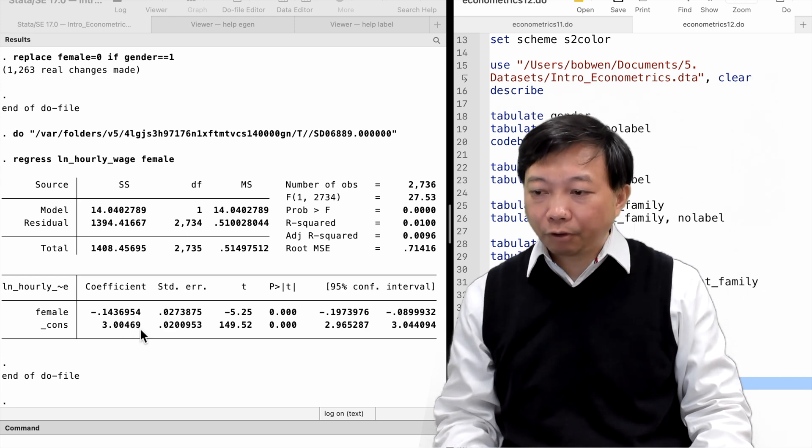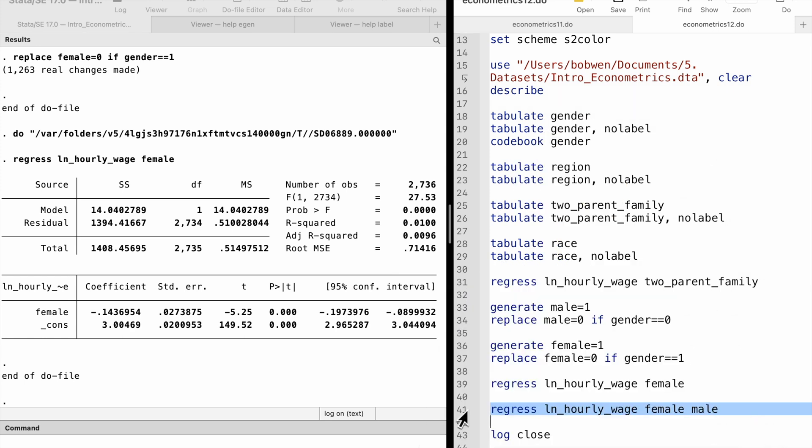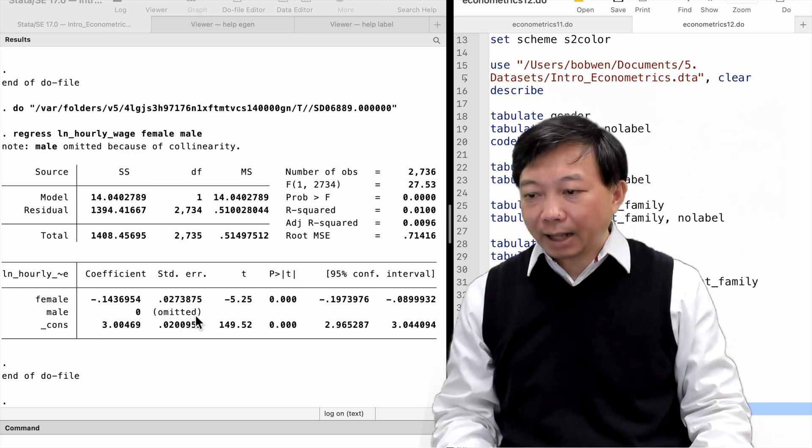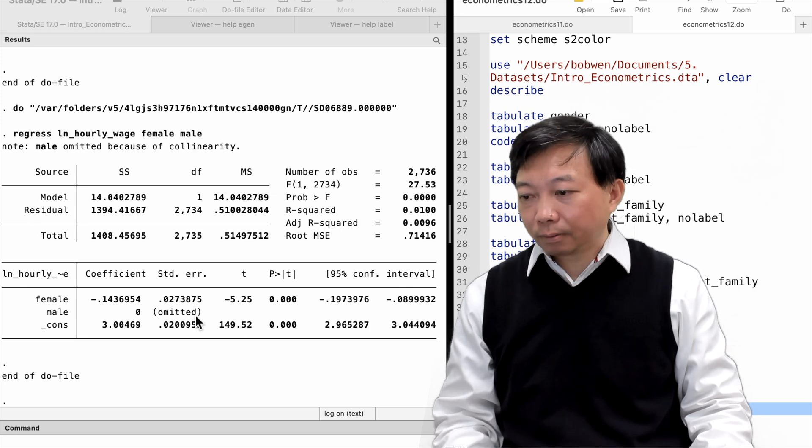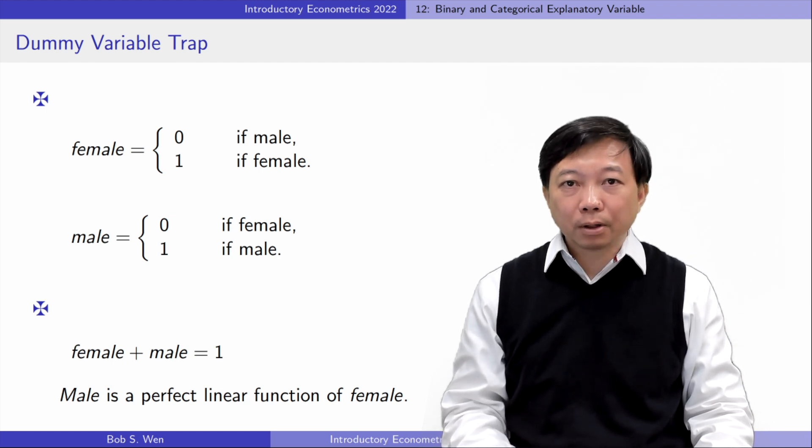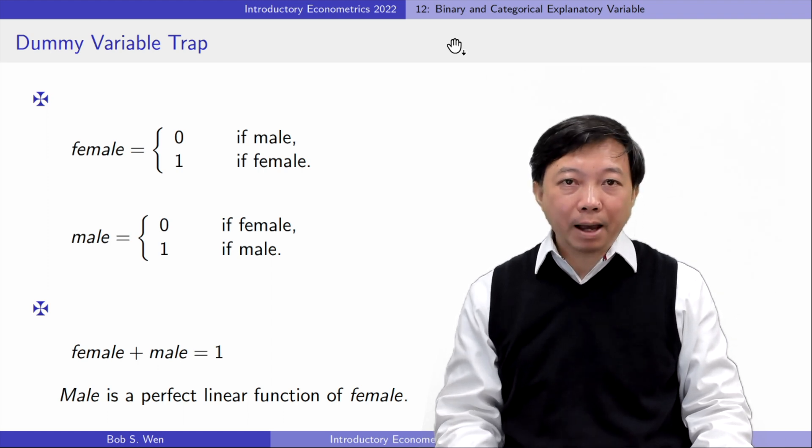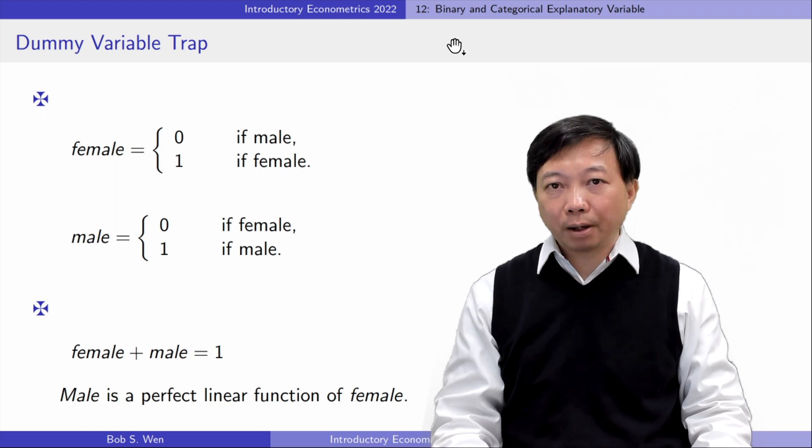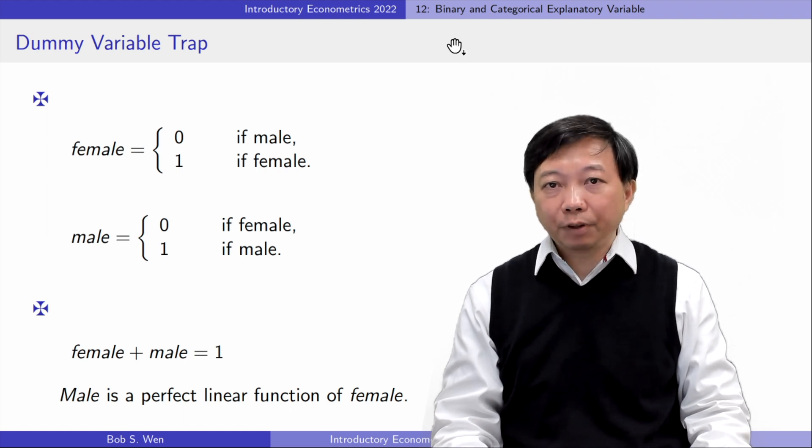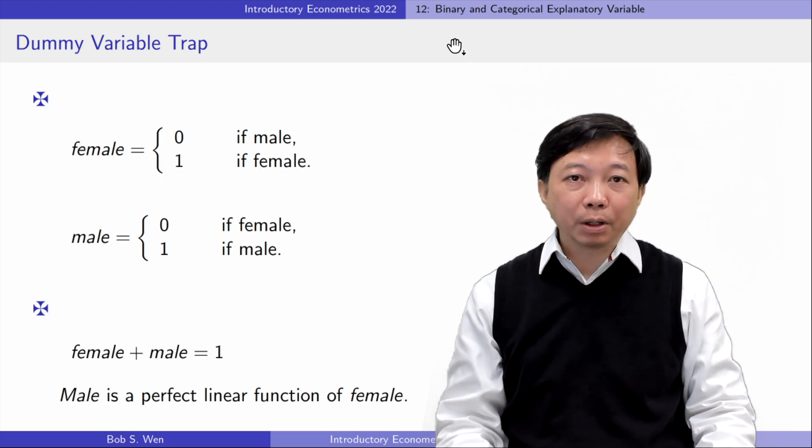Including both binary variables, female and male, will result in the dummy variable trap. We could not include both in the model because it will lead to perfect collinearity. Male plus female equals 1, which means male is a perfect linear function of female. The two dummies describe the same feature of the sample. We should only use one in the model to avoid the dummy variable trap.